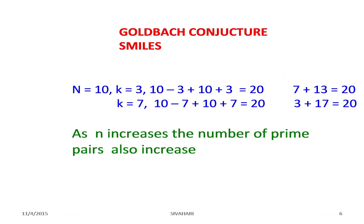n equals 10 has one option: k equals 3. 10 minus 3 and 10 plus 3 gives 7 plus 13 equals 20, the next even number. As n increases, the number of prime pairs also increases.